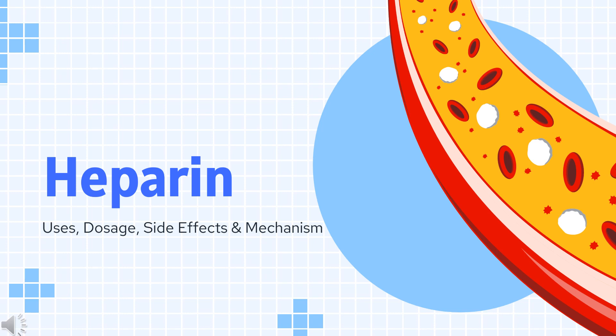Heparin is an anticoagulant indicated for thromboprophylaxis and to treat thrombosis associated with a variety of conditions such as pulmonary embolism and atrial fibrillation.